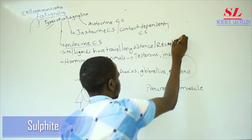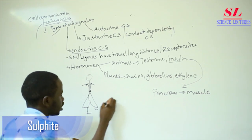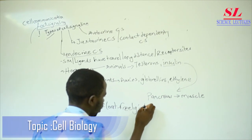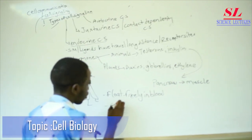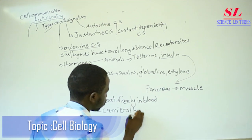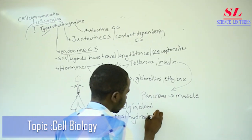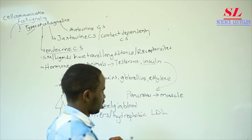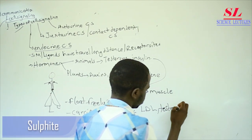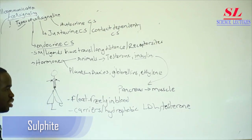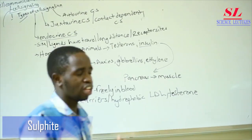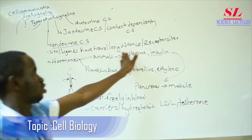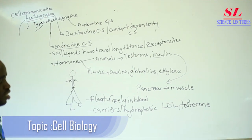In endocrine cell signalling, the ligands travel for long distances before they reach their receptor sites. The signaling molecules can either float freely in blood, or they can have carriers. Carriers are very common for hydrophobic molecules — like LDL and testosterone — which can't float freely in blood, so carriers transport them to their various receptor sites. The key takeaway: signaling molecules must travel for long distances. That is endocrine cell signalling.